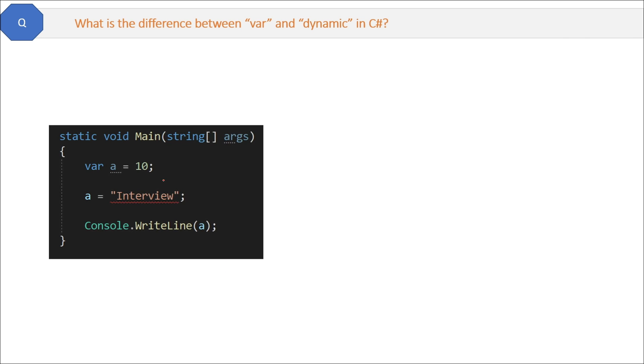Here is one question about variables: what is the difference between var and dynamic in C#? It is very simple. Let's start with the var keyword. See this code: a equals 10, and then we are trying to assign a string to this variable a. This will give a build error, or you can say a compile-time error. You can see the red line here.